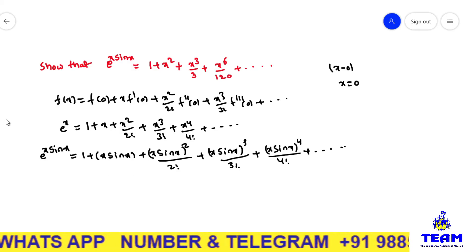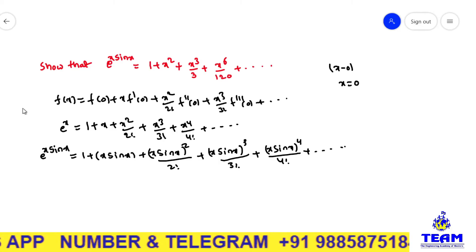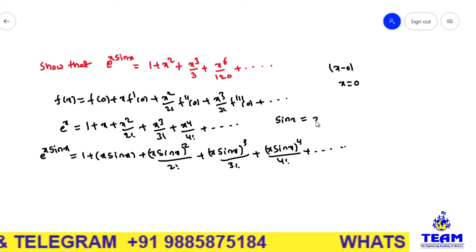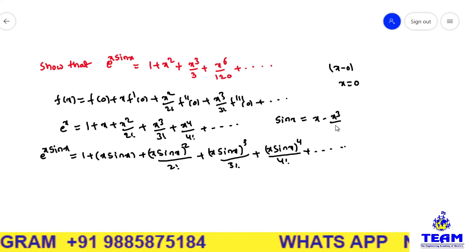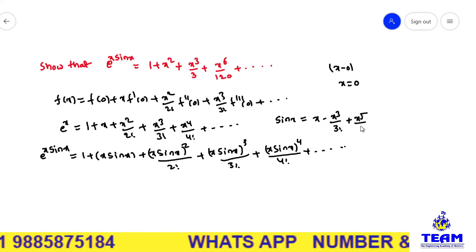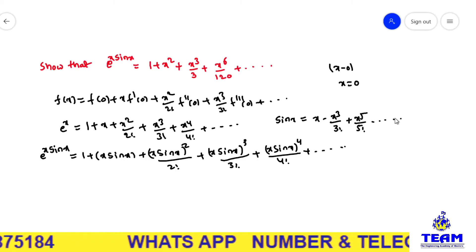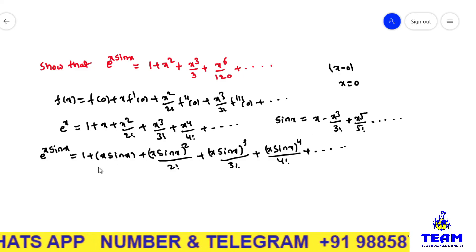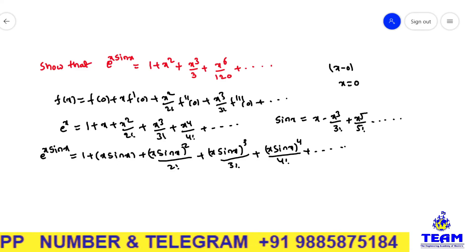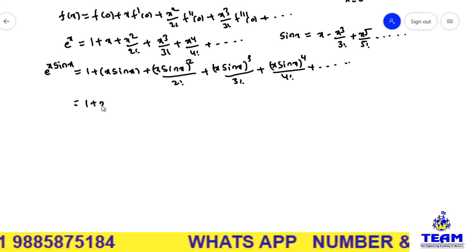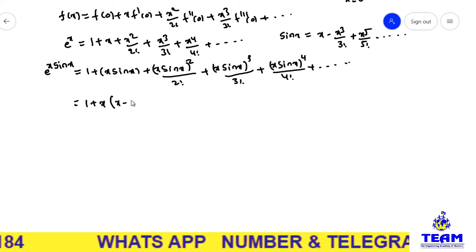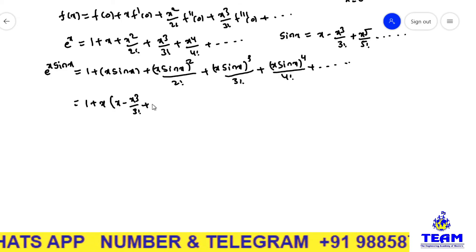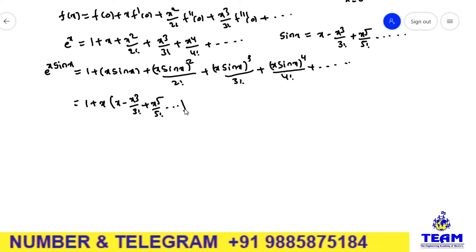We know the expansion of sin x. The McLaurin expansion of sin x about x=0 is x − x³/3! + x⁵/5! and so on. Now using this sin x expansion, this becomes 1 + x·(x − x³/3! + x⁵/5! + so on).